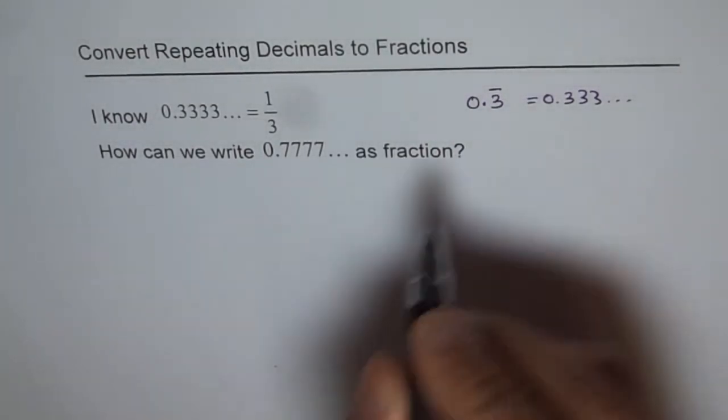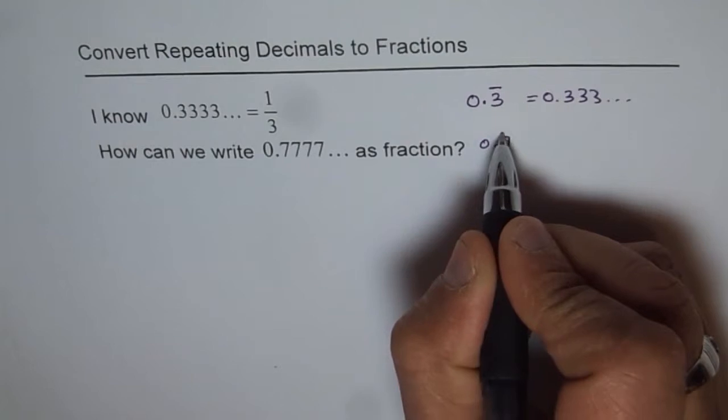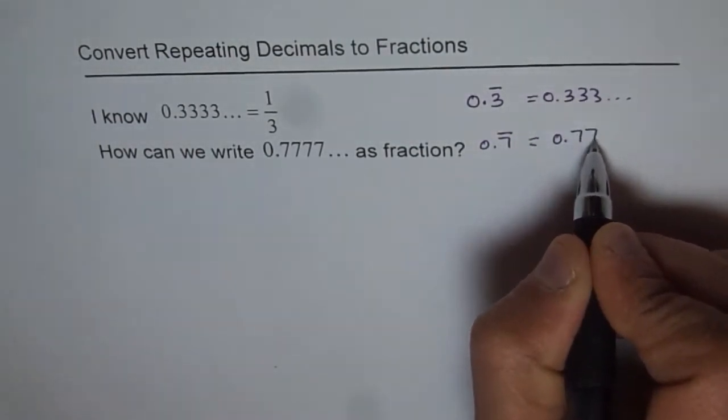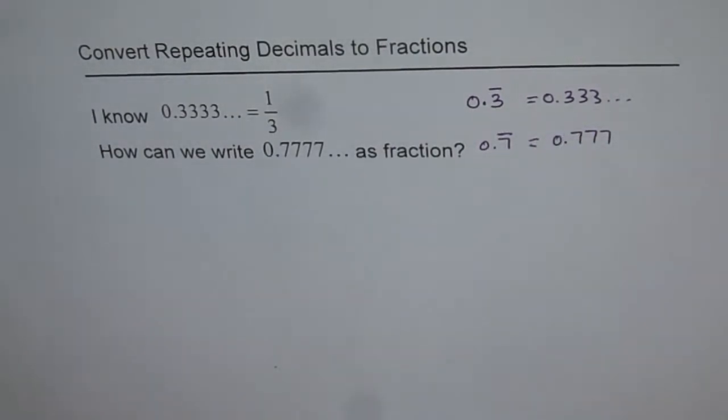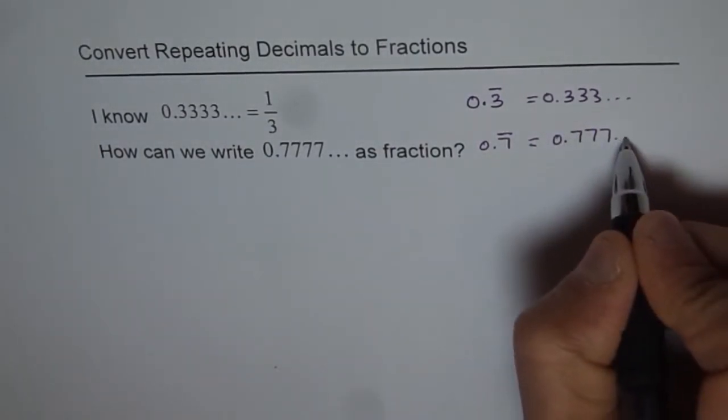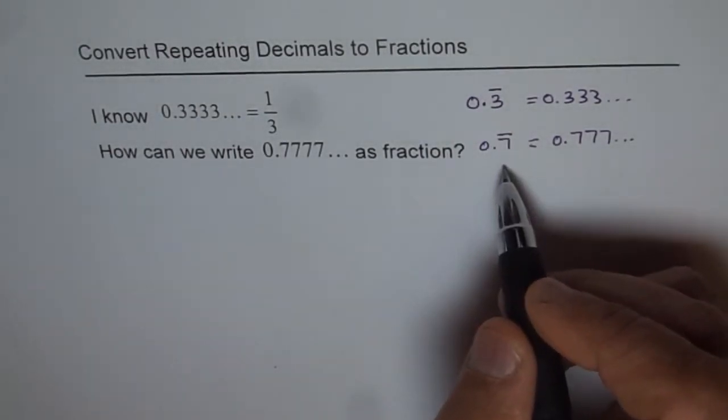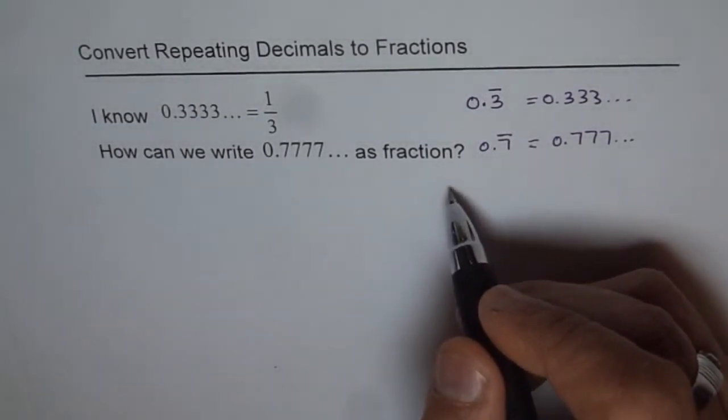So we can write 0.7 recurring with a bar on the top. This actually means 0 point whatever repeats, just write a bar on that. So we know that repeats and that repeats forever. And we'll use this nomenclature in finding solution for this.